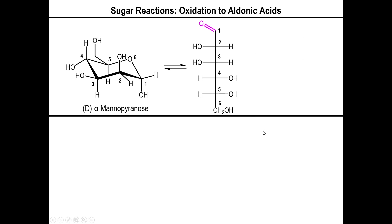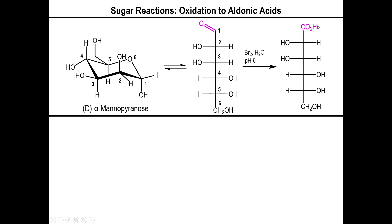One thing we can do to this six-carbon aldose sugar is to react it with elemental bromine in water — aqueous bromine, to be most exact. This is often done at slightly acidic pH. The end result is that the aldehyde component will be oxidized exclusively to the carboxylic acid. The component where one end is a carboxylic acid and the other end is the CH₂OH — your primary alcohol — is known as an aldonic acid, which derives from an aldose sugar.